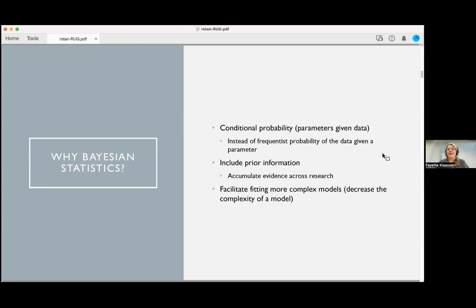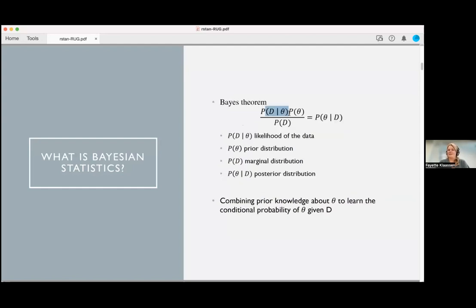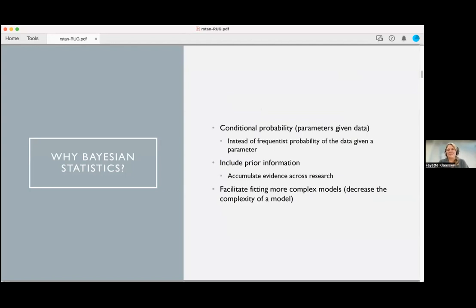This conditional probability is a different quantity than what we get in a frequentist framework. In frequentist statistics, we evaluate the likelihood of the data given a set of parameters. In a Bayesian framework, we get the likelihood of the parameters given the observed data, which is a more intuitive and sound way of driving inference. You're interested in what parameter values we can expect, not just the probability of the data.